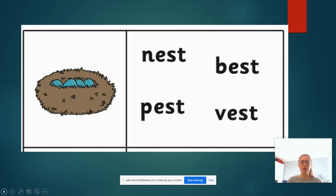So, we've got n-e-s-t, nest. We've got f-e-s-t, fest. We've got p-e-s-t, pest. V-e-s-t, vest. Which one of those words matches with the picture? It is nest. Well done if you got that one correctly.